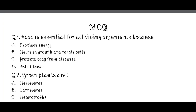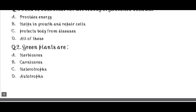Next question: Green plants are - herbivores, carnivores, heterotrophs, or autotrophs? The correct answer is option D - autotrophs. Green plants are autotrophs. Autotrophs means self-nourishment - plants make their own food, that is why they are called autotrophs.